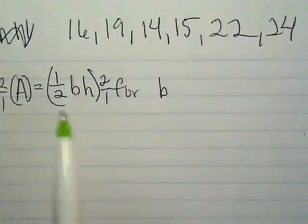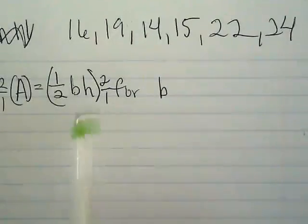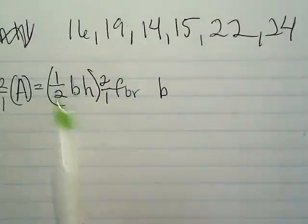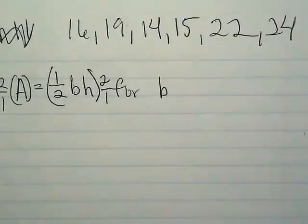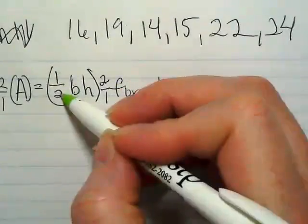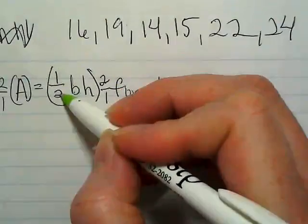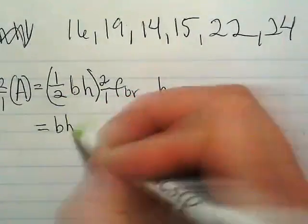They're all being multiplied together right now. If this said one-half plus base plus height, then we would have to distribute. But right now, I always think of a term as things that are stuck together with a magnet, but the magnet is multiplication. So I'm just going to take two over one times one over two, and that's going to give me an invisible one. So the right side of my equation is just going to be base and height now.